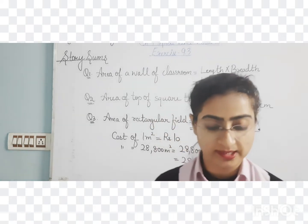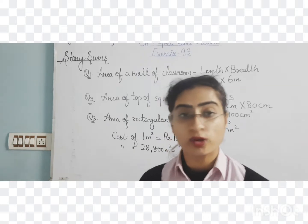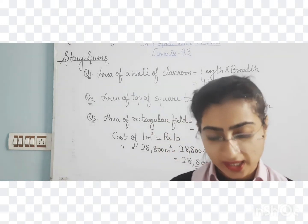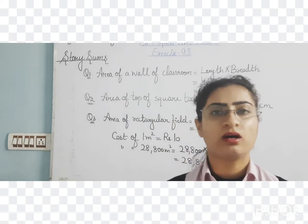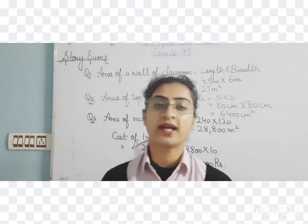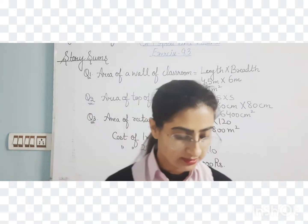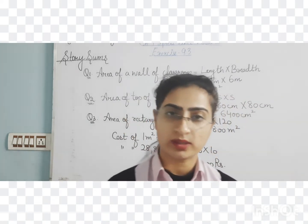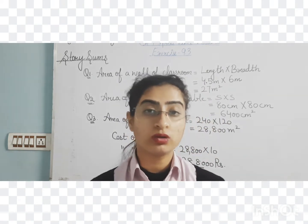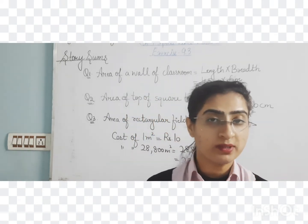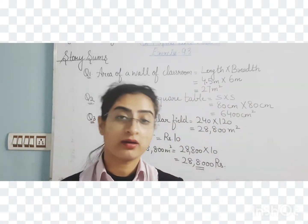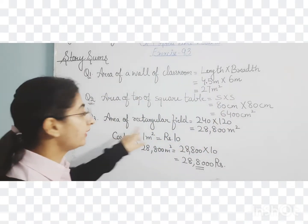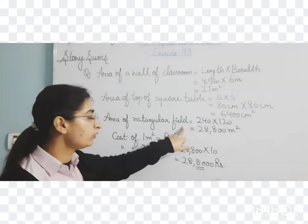Next question: what will be the cost of mowing grass in a rectangular field of dimensions 240 meters by 120 meters at the rate of rupees 10 per square meter? The length is 240 meters and breadth is 120 meters. First, we need to find the area of the rectangular field, which is 240 multiplied by 120.